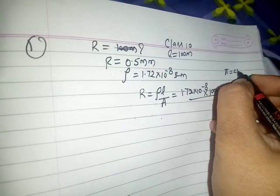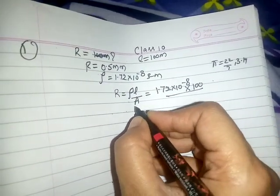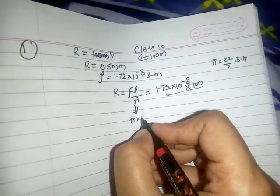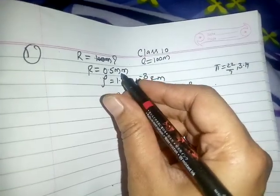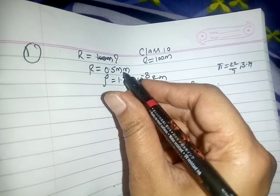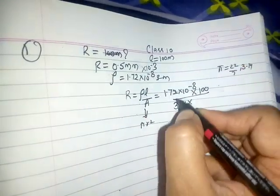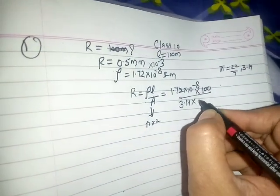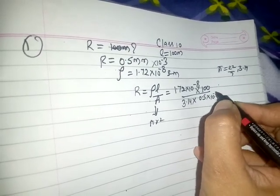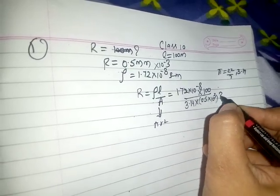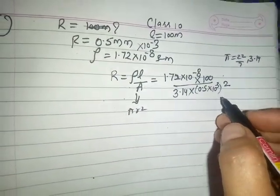Pi can be written as 3.14, so instead of area we write pi r squared — that is 3.14 times r squared. Radius is 0.5 mm, which is given in mm, so you have to convert it to meters by multiplying with 10 to the power minus 3. So radius becomes 0.5 into 10 to the power minus 3, squared, because of pi r squared.